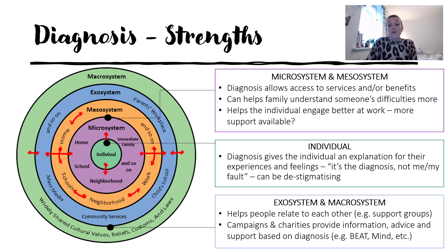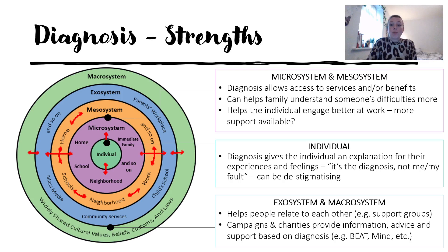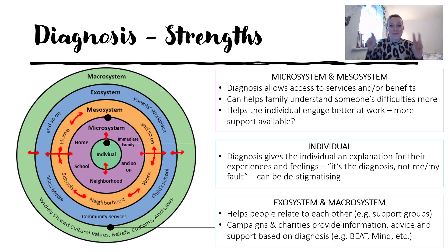At the exosystem and macrosystem level, diagnosis helps people relate to each other through things like support groups, and campaigns and charities provide information, advice, and support based on diagnosis — for example, BEAT, the eating disorder charity, or gender dysphoria support groups. I use the diagnostic term intentionally, not because I don't believe those experiences are real.